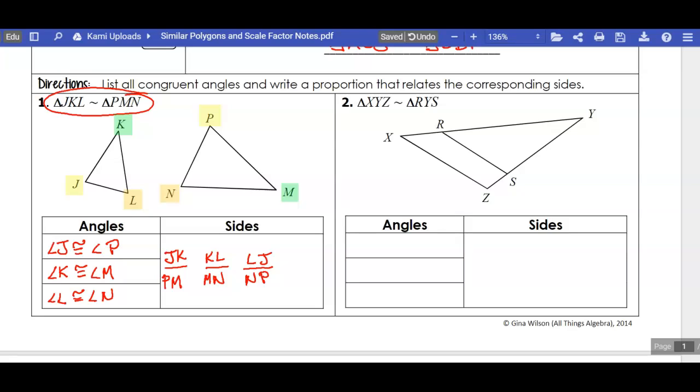If you notice, on the top are all sides of the smaller triangle, and on the bottom are all sides of the larger triangle. I wrote all of these in the same order. So these are corresponding sides. JKPM, KLMN are corresponding sides, and these. So corresponding sides are proportional, which means that all of these ratios are going to be equal.